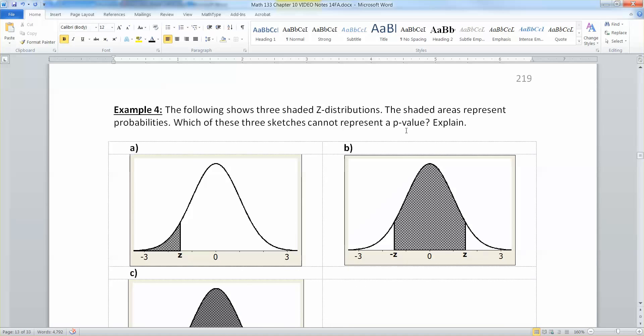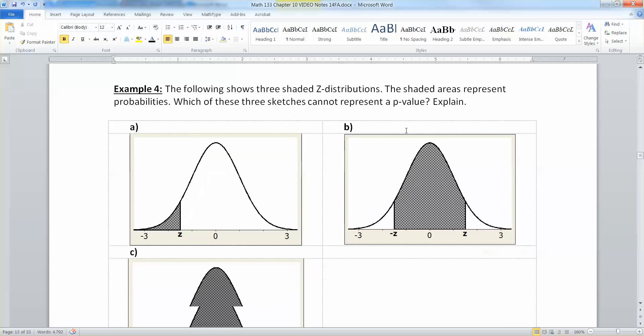The following shows three shaded Z distributions. The shaded areas represent probabilities. Which of these three sketches cannot represent a p-value?